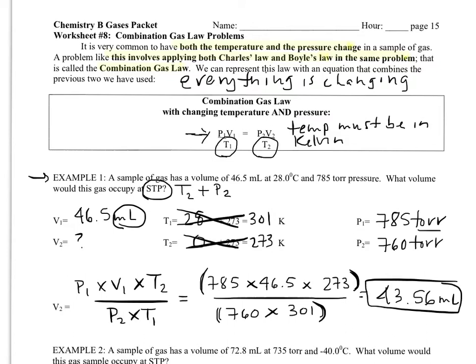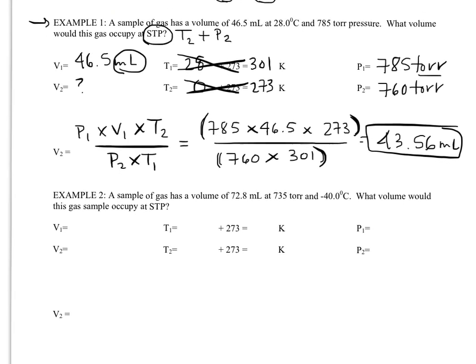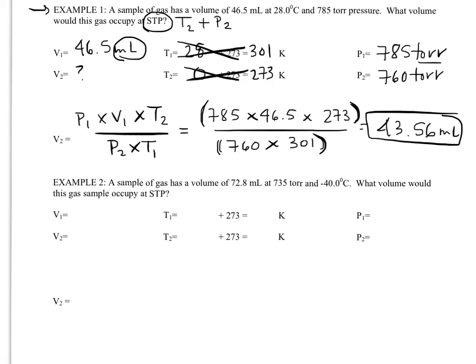And I get 43.56. My units established for volume are milliliters. If you're not getting 43, if you're getting some really big number or some incredibly small number, your calculator's probably misunderstanding the order of operations and you need to add parentheses. Alright. Example two.